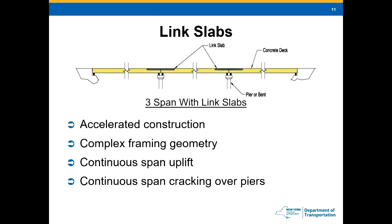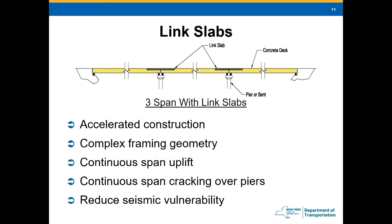With continuous spans, we always see some cracking right over the pier — usually one larger crack in the middle and a couple of smaller cracks a few feet away on either side. We can avoid that with link slabs. Also from the seismic standpoint, we can reduce seismic vulnerability. When you have individual spans acting independently during a seismic event, they're moving in all different directions and it's very hard to predict the actual forces. Once we connect everything together, we slow things down a lot — it's a much more controlled, predictable response. You can also use the stiffness of bearings to get a more uniform distribution of forces to all your substructures.